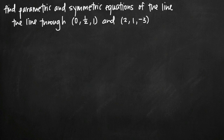Today we're going to be talking about how to find parametric and symmetric equations of a line. In this particular problem, we've been given the line which passes through two coordinate points: (0, 1/2, 1) and (2, 1, -3). How are we going to find parametric and symmetric equations for this line passing through these two points?